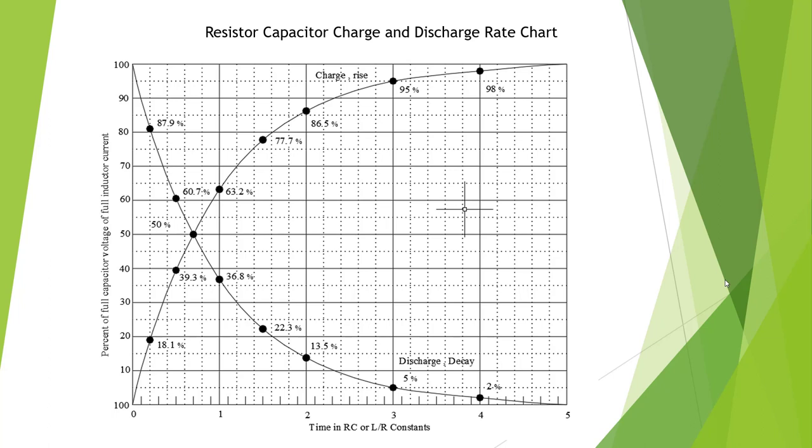Here is the resistor capacitor charge and discharge chart. What we go by here is RC, one time constant. Time constant would be resistance times capacitance.